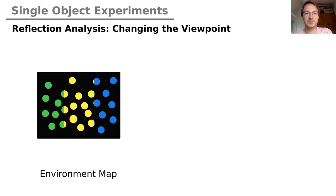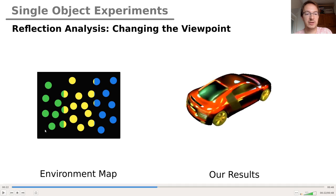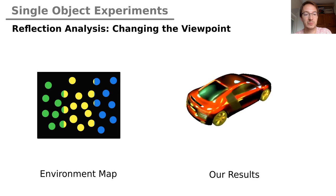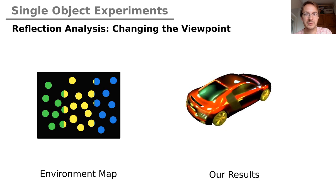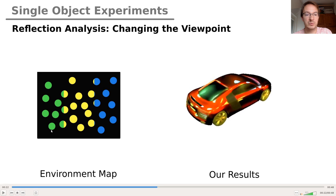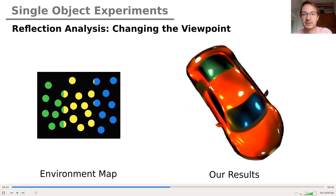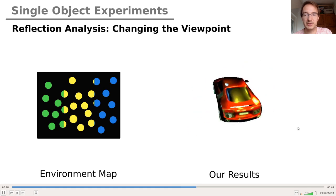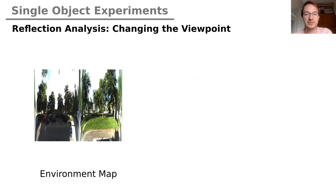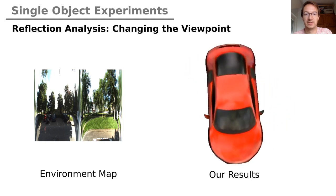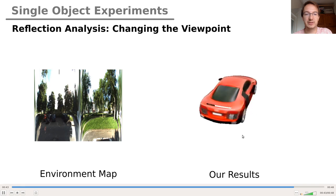We also performed a reflection analysis where we change the viewpoint using a complex environment map. Our method produces viewpoint-varying appearance based on this environment map — in this case we need to query the surface light field multiple times during the rendering operator since we have not just a single point light source but multiple. The results look very smooth as we rotate the object, demonstrating how powerful this representation is. Here is a different environment map where you can see clouds mirroring in the surface of the vehicle.